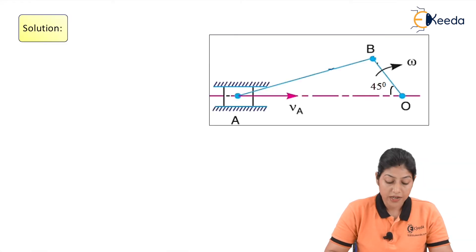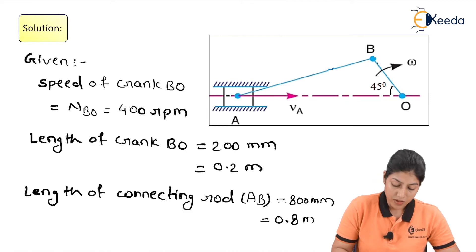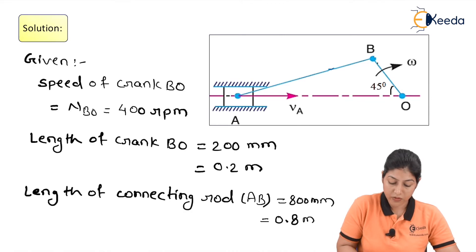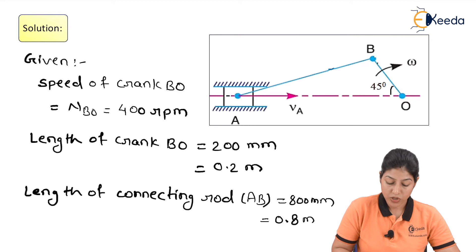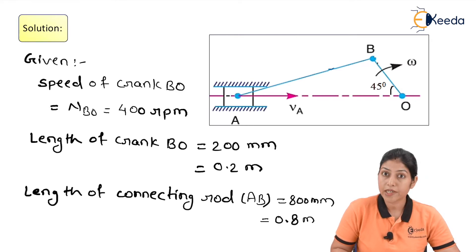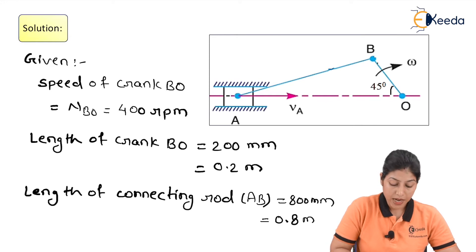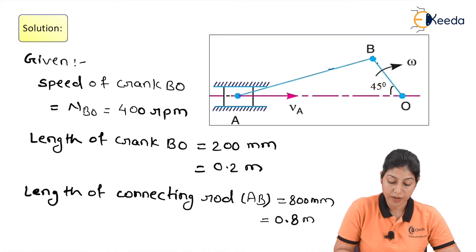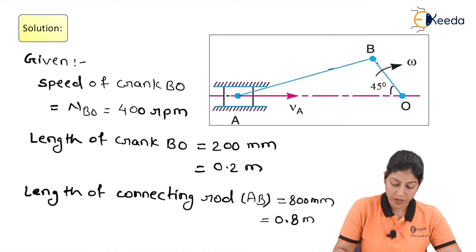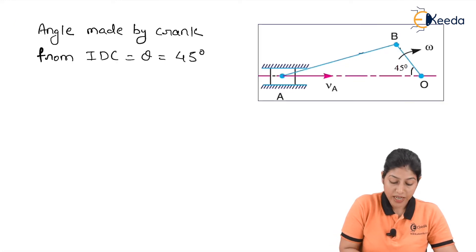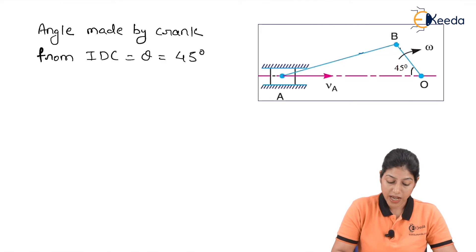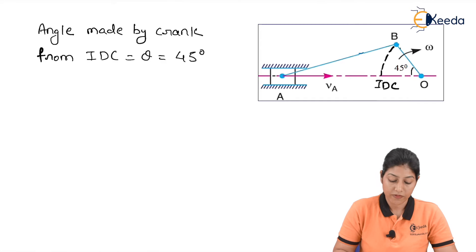Let us start the solution. First I will write down all the given values. Length of the crank is given as 200 mm, which is 0.2 meter. Length of the connecting rod is 800 mm, which is 0.8 meter. Speed of the crank is 400 rpm. The value of theta is 45 degrees, which is the angle made by the crank from the inner dead center.